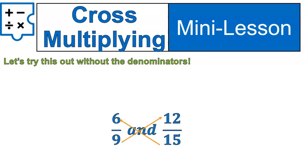Here we're going to cross-multiply: 15 times 6 is 90, 9 times 12 is 108. So therefore, we would put in the less than symbol, and we would know 6 ninths is less than 12 fifteenths. That's it. There we go.